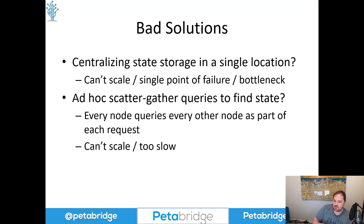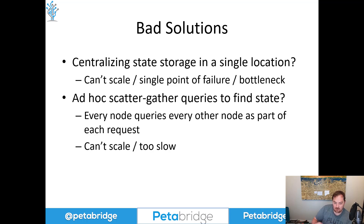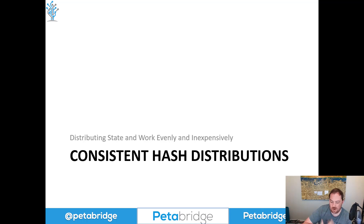So we need something that's a little bit more predictable, a little bit more systematic — some way of being able to determine ahead of time where state might be stored inside the system. That system also needs to be flexible enough to accommodate scaling up the number of storage locations and scaling them down at some point in the future. And this is where consistent hashing enters the picture. So let's talk about the right solution to this problem, which is consistent hash distributions.